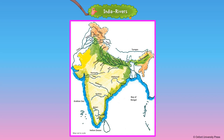The Brahmaputra is one of the longest rivers originating in the Himalayas. It originates near Lake Mansarovar in Tibet and enters India in Arunachal Pradesh.